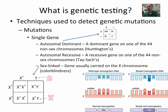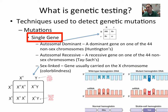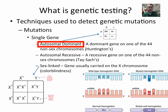When we're talking about genetic testing, we're really looking at mutations within a gene or a chromosome. The first type of mutation is a single gene mutation, which comes in three different flavors. Number one is autosomal dominant, like we saw in Huntington's disease.